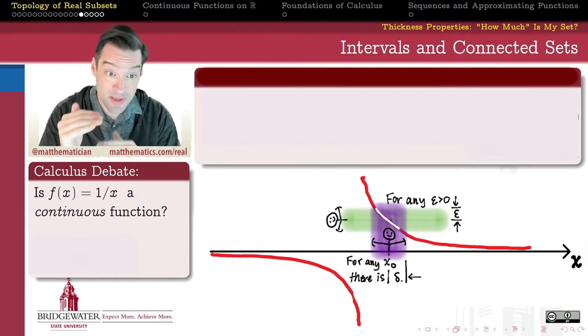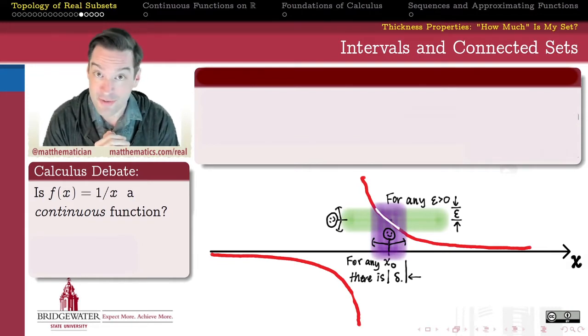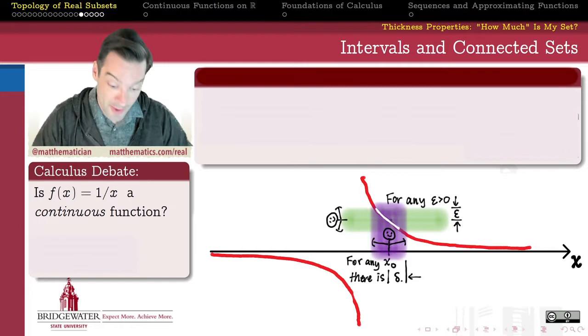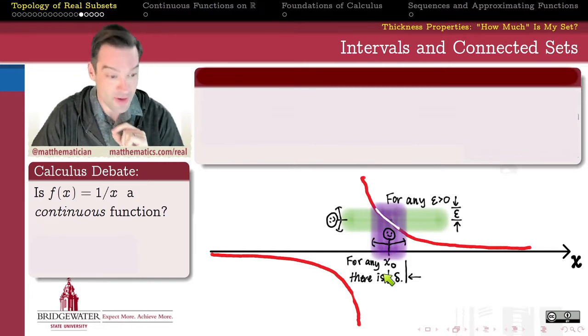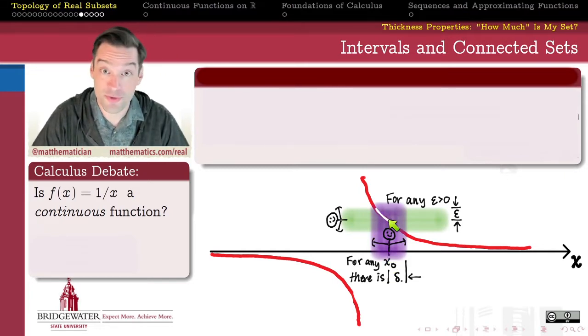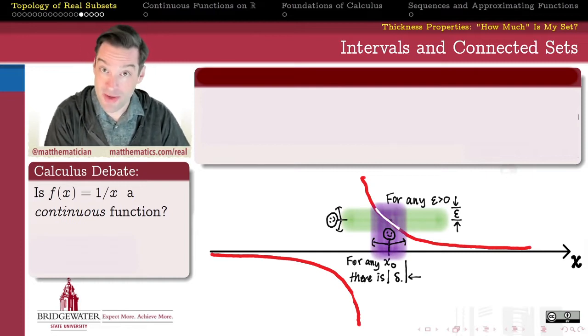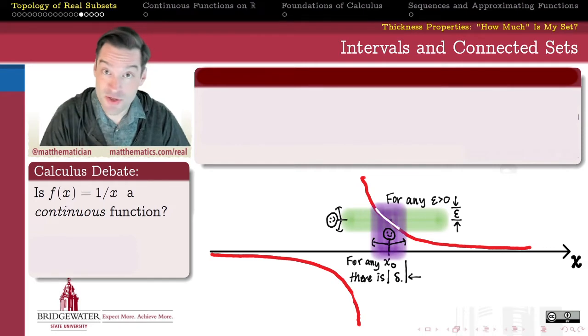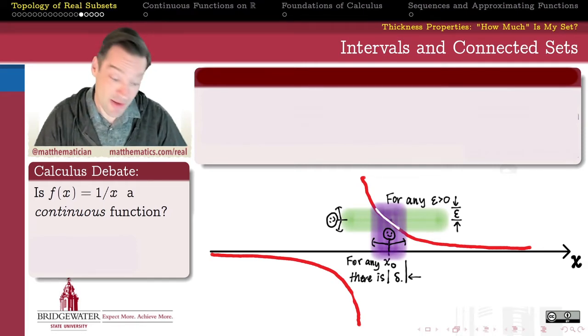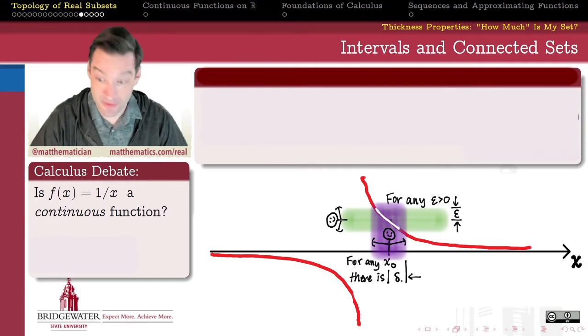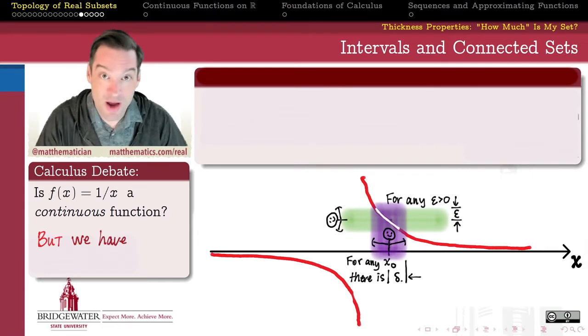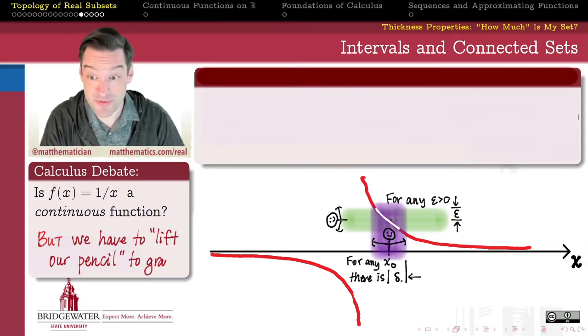For any epsilon that you give me that's positive, I can find a delta that's small enough that when I am delta close to x-naught, my output will necessarily be epsilon close to 1 over x-naught. So any point of the domain that you give me, I can show you that this function is continuous at that point, using the epsilon delta definition of continuity. So why is it that we often don't believe in our calculus classes that this is a continuous function?